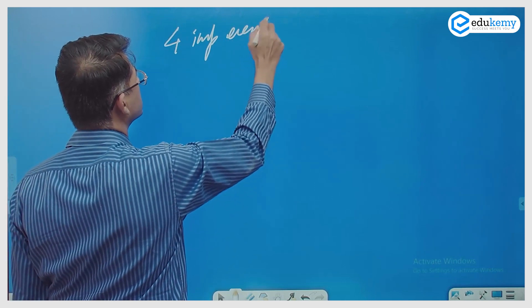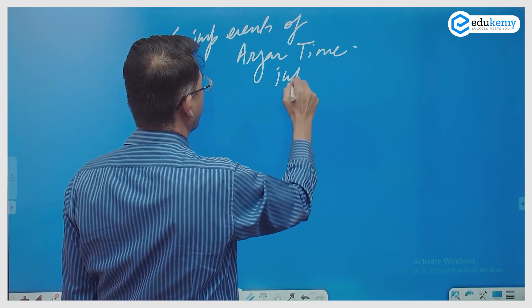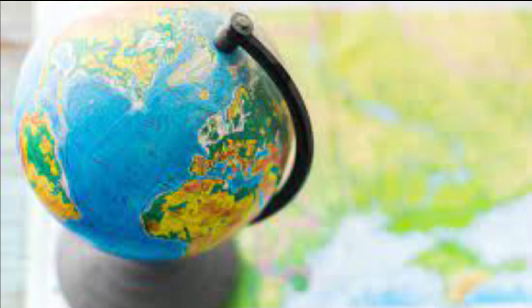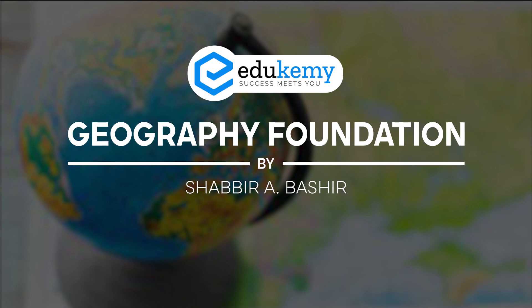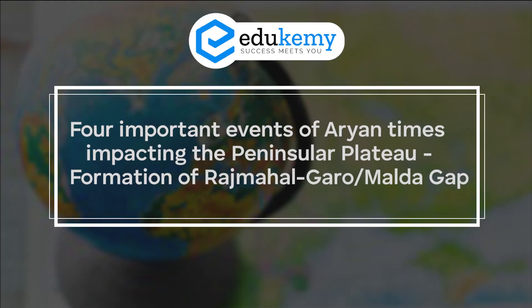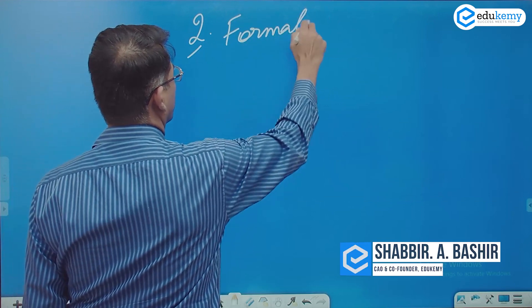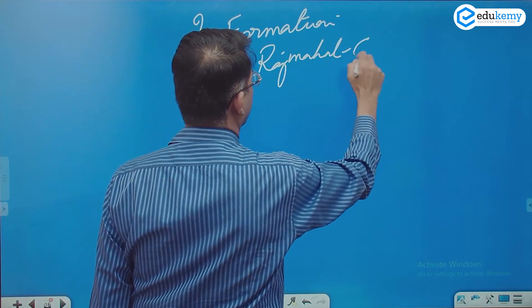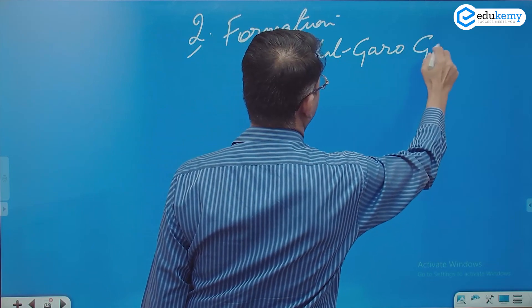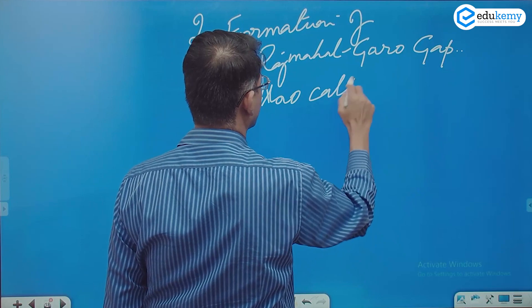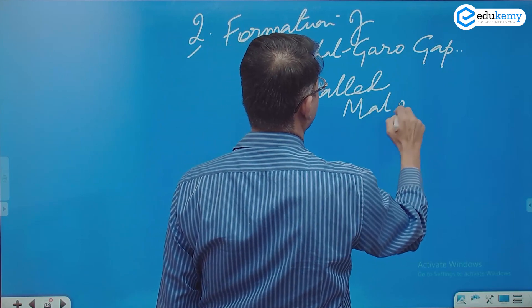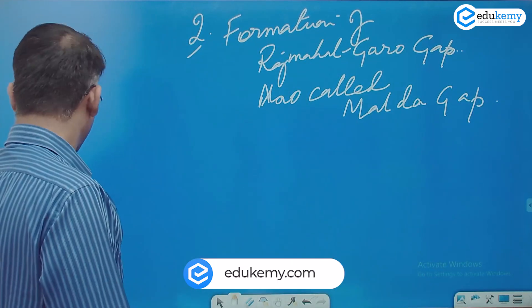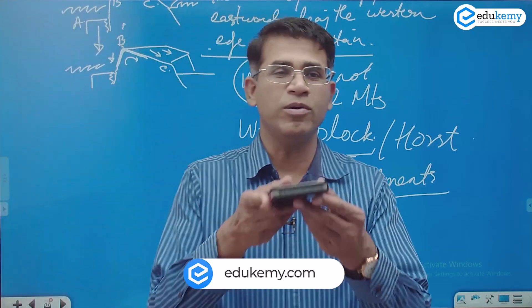The four important events of orogenies impacting the peninsular plateau. Number one was Western Ghats formation. Number two was the formation of the Raj Mahal Garo Gap, also called the Malda Gap.